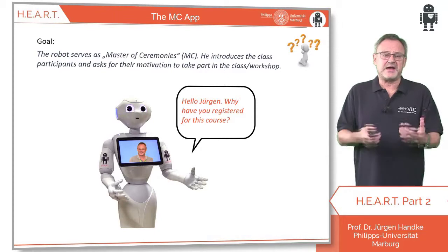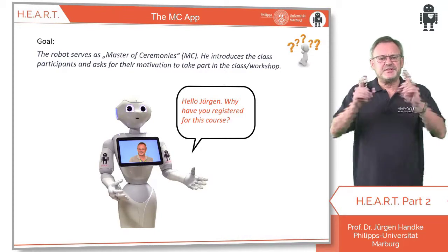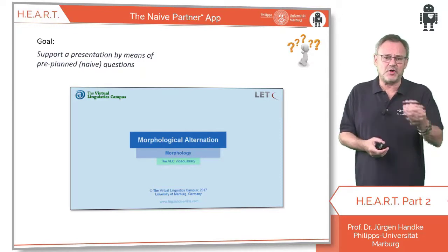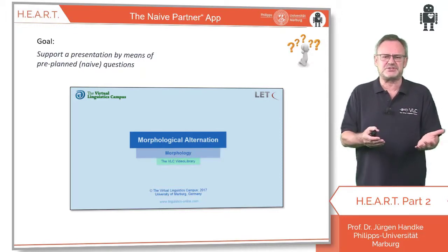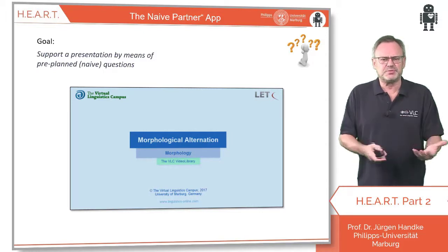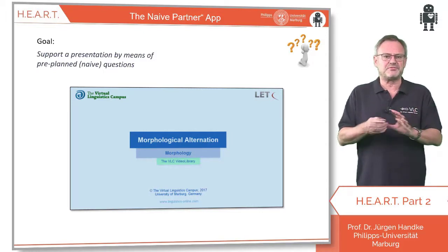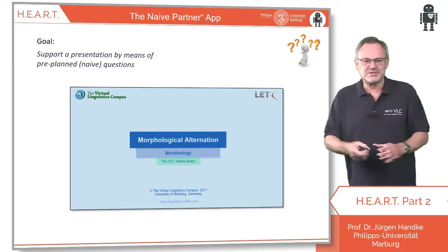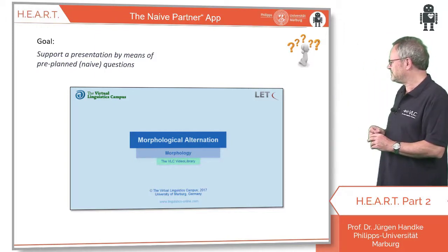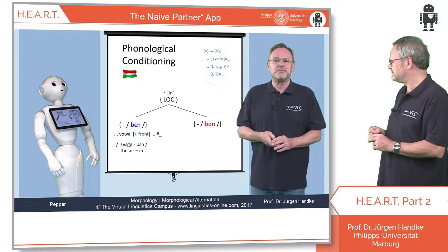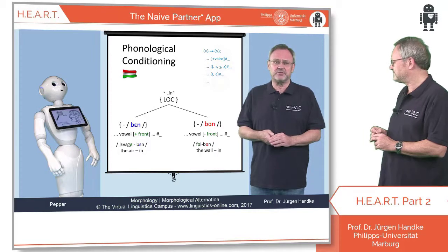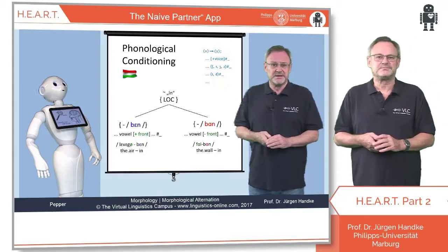A further app uses the naive potential of the robot for didactic purposes. It is often essential to ask simple, even naive questions, whereas humans would be reluctant to do that. Robots have no problems doing that, and that's why we can employ them in presentations and in educational videos. For example: 'What ban has to be chosen if the final stem vowel is a back vowel?' — 'Isn't this some sort of harmony?' — 'Yes.'